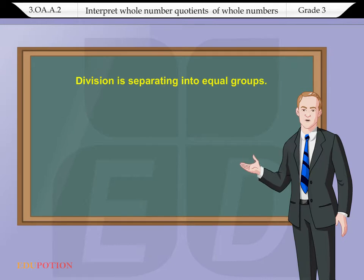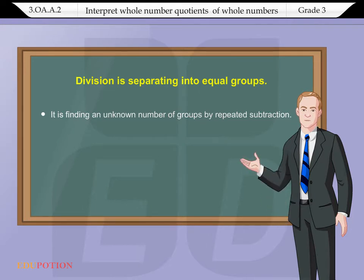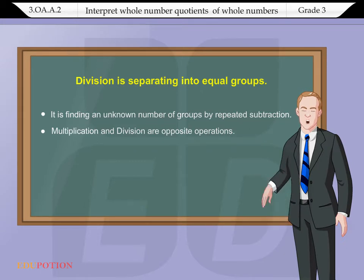Division is separating into equal groups. It is finding an unknown number of groups by repeated subtraction. Multiplication and division are opposite operations.